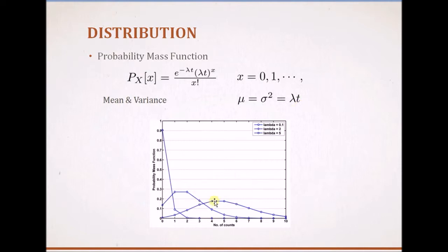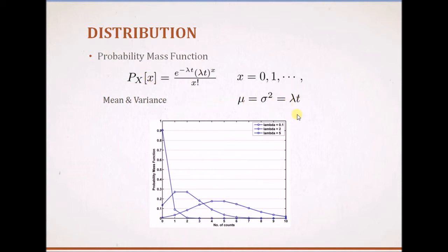These plots show the probability mass function for different values of lambda. For example, for lambda equal to 0.1, it almost looks like an exponential distribution. For values of 2 and 5, the peak of the curve displaces away from x equal to 0. The mean of the distribution is given by the parameter lambda t, and if we assume t equals 1, it is given by lambda.